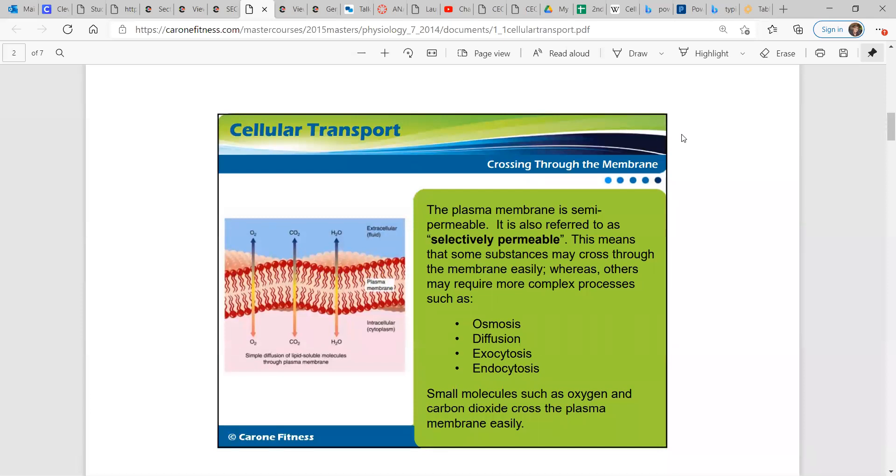The plasma membrane is semi-permeable. It is also referred to as selectively permeable. This means that it can select which substances can cross through the membranes easily, and other things may need to be brought over through more complex processes like osmosis, diffusion, exocytosis, or endocytosis.